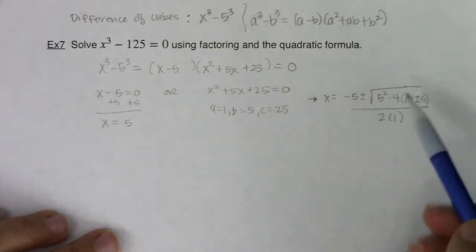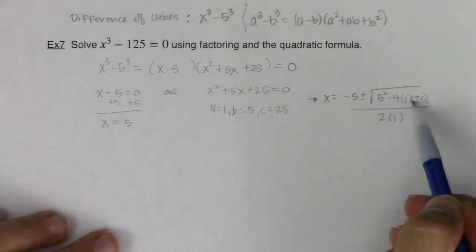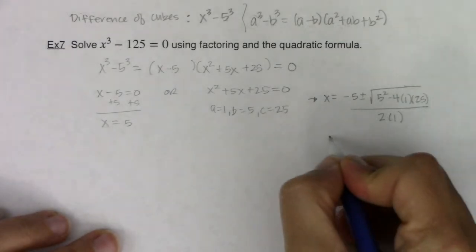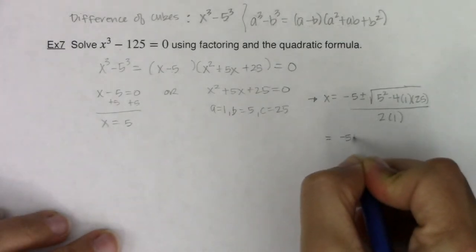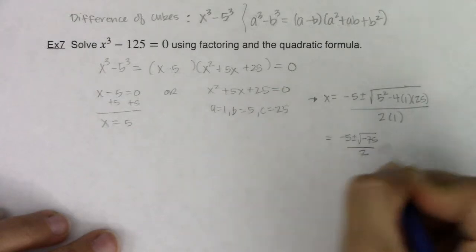And when I simplify this a little bit, let's see what we have here. I've got 5 squared, which is 25. 25 minus, well, 4 times 25 is 100, so I have 25 minus 100. That's going to leave me with negative 75. So I have negative 5 plus or minus the square root of 75 all over 2.